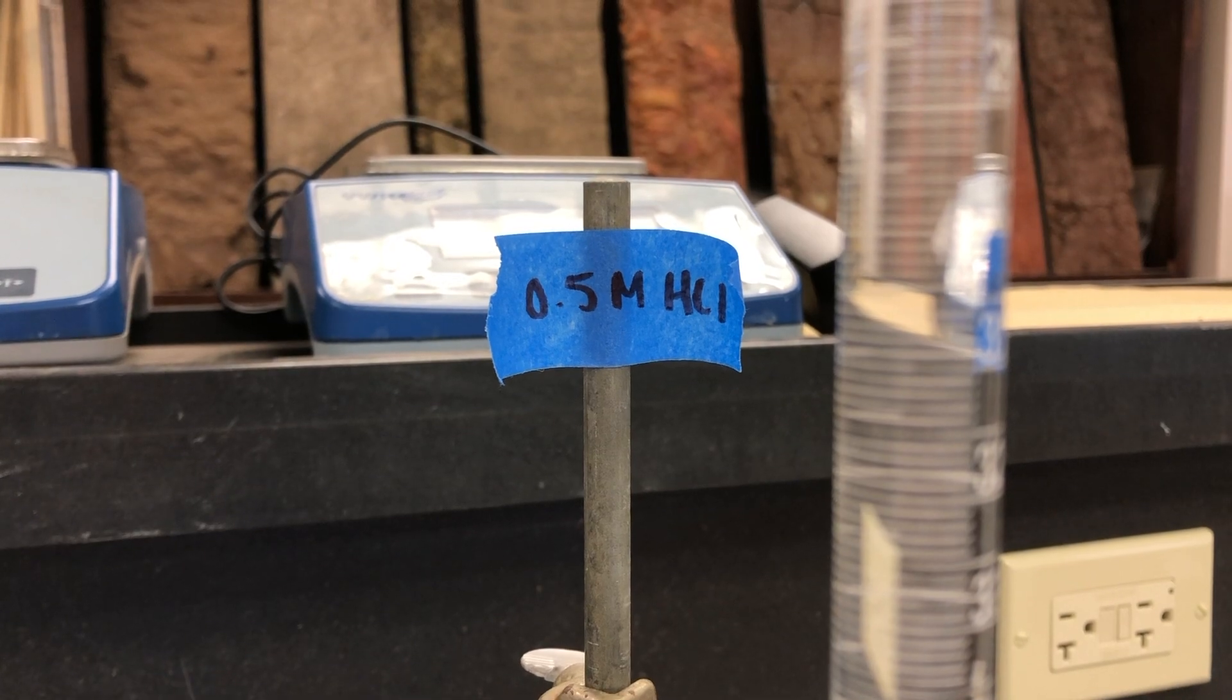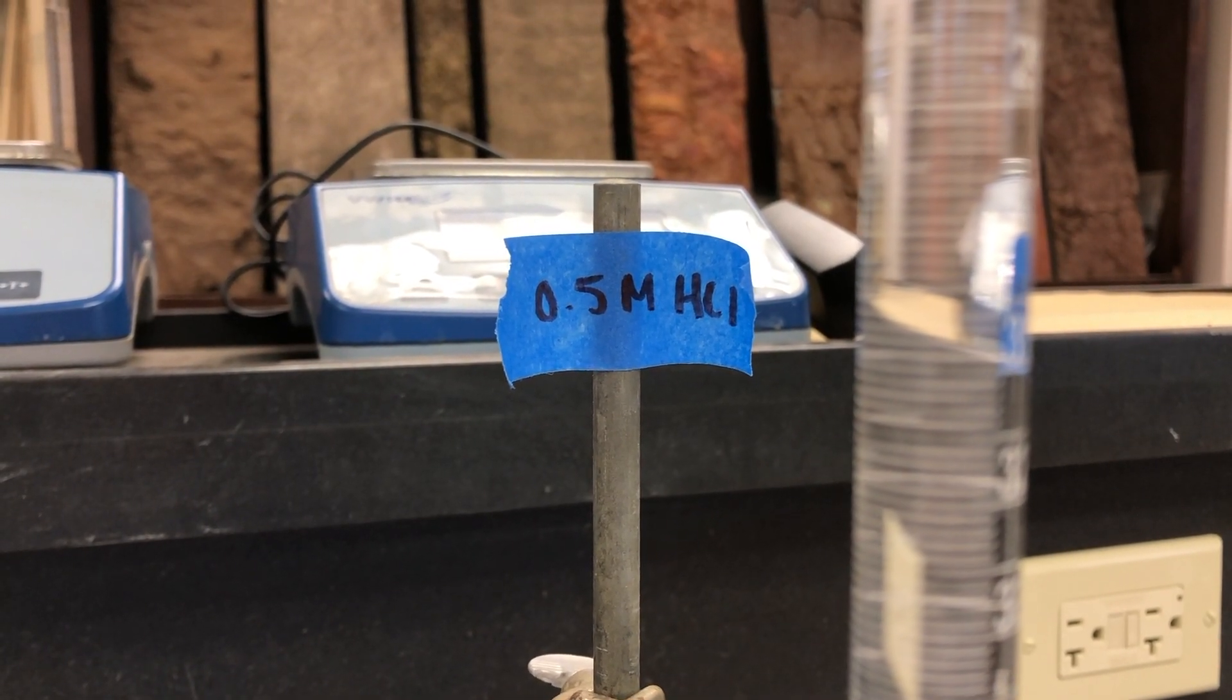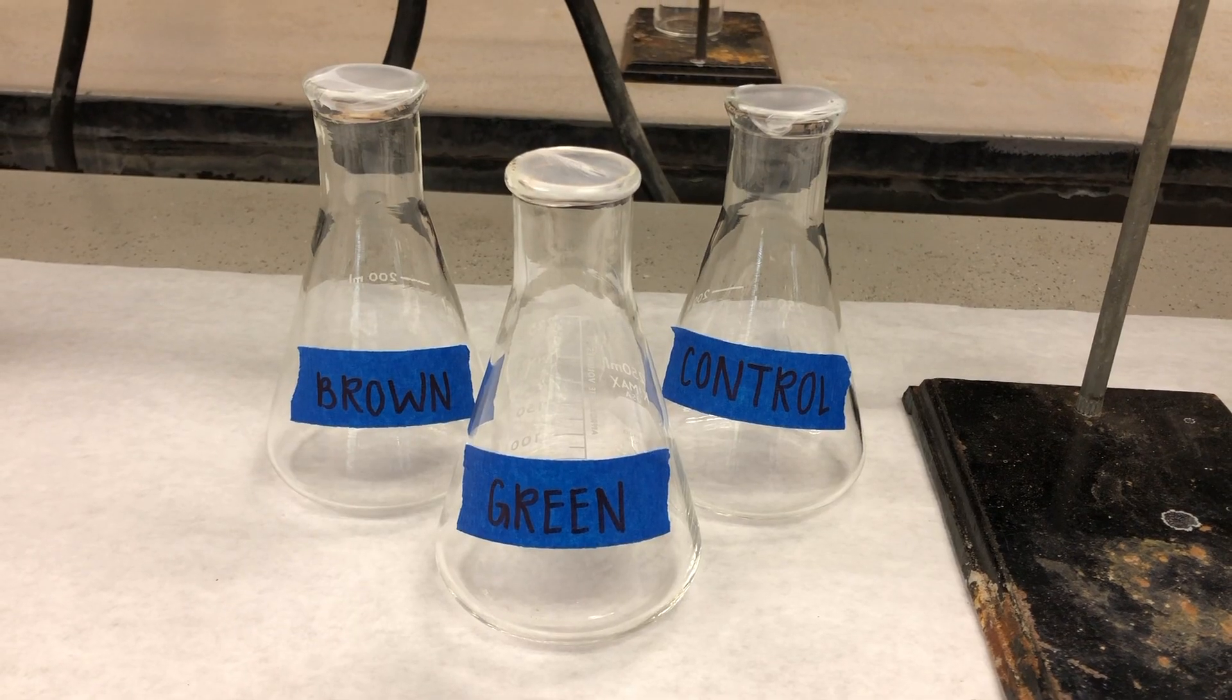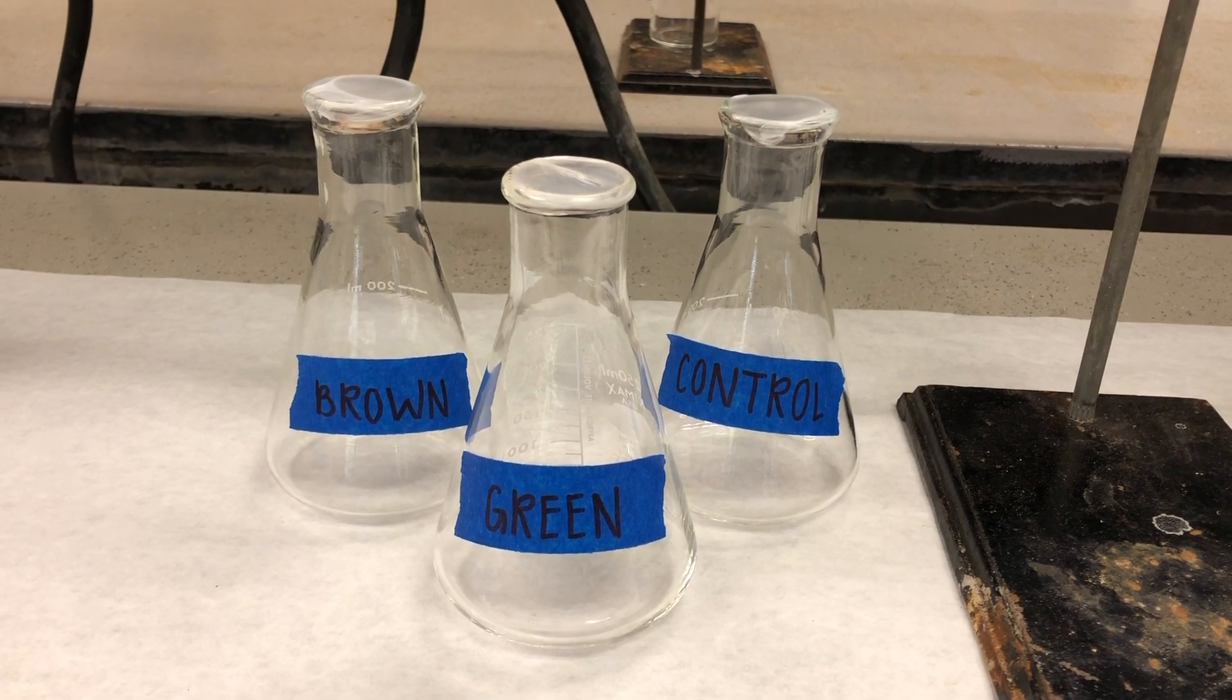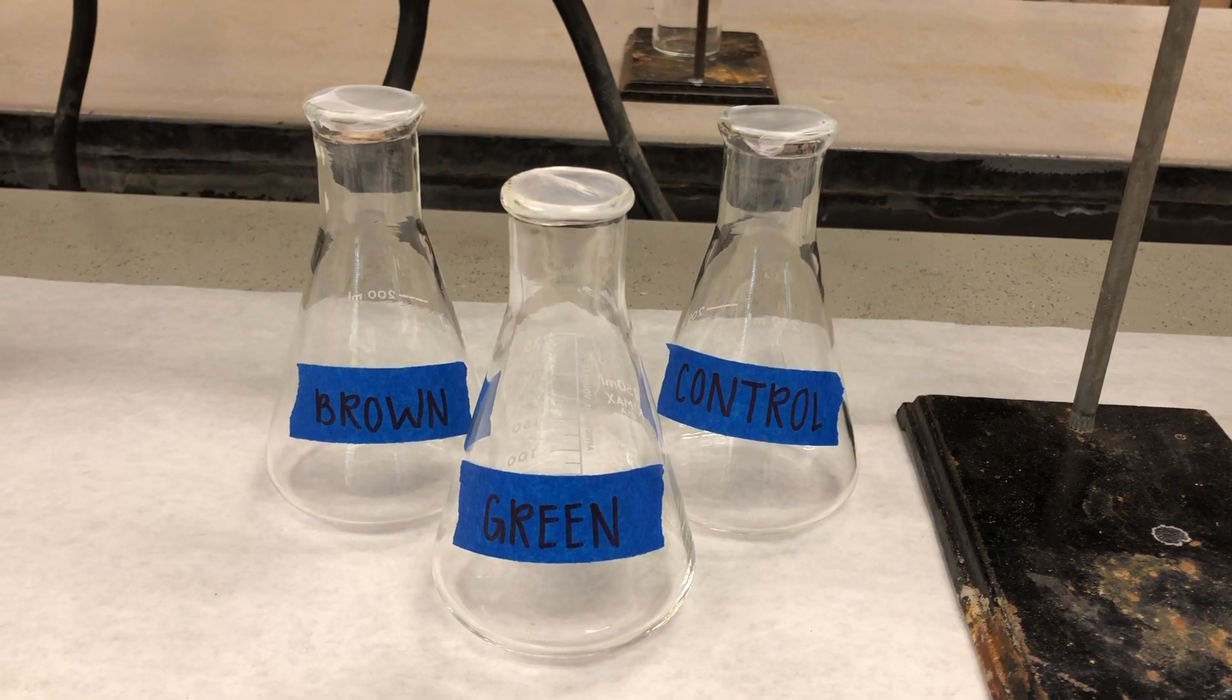The burette should be filled with 0.5 molar hydrochloric acid and labeled accordingly. Before beginning the titration, label three Erlenmeyer flasks with green, brown, and control.